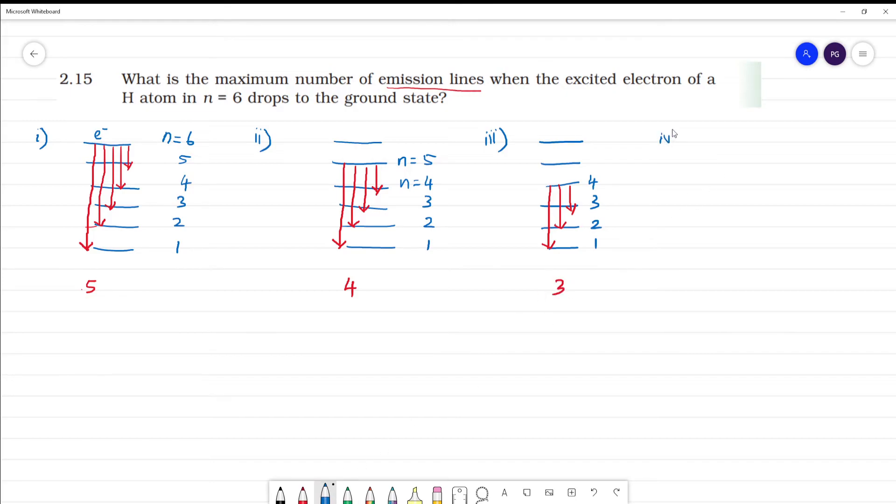Now fourth case. N equals 6, 5, 4. This is 3, 2, 1. The third electron goes to 2. So you have 2.